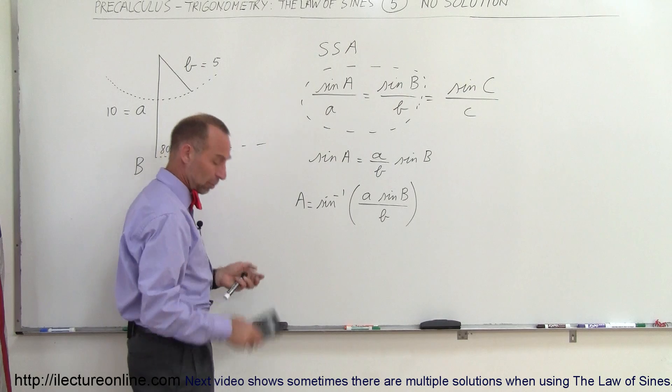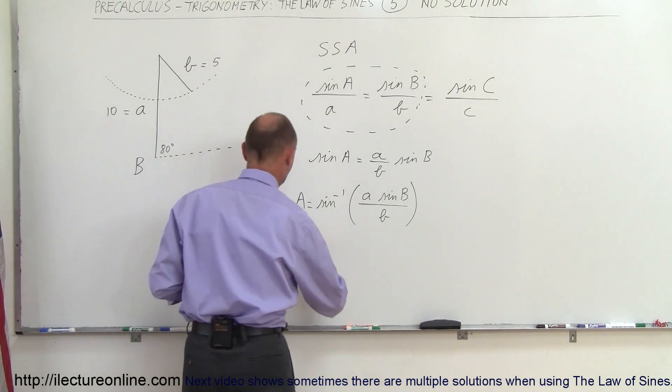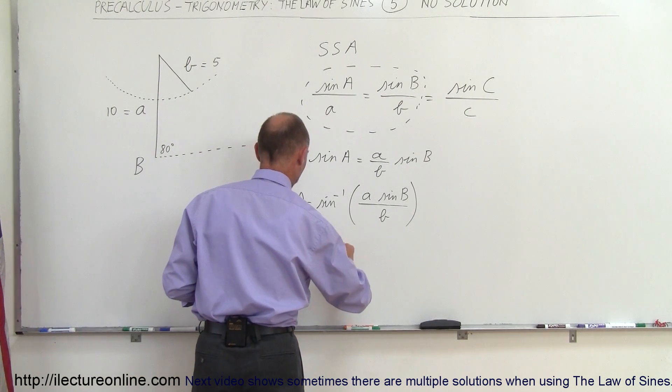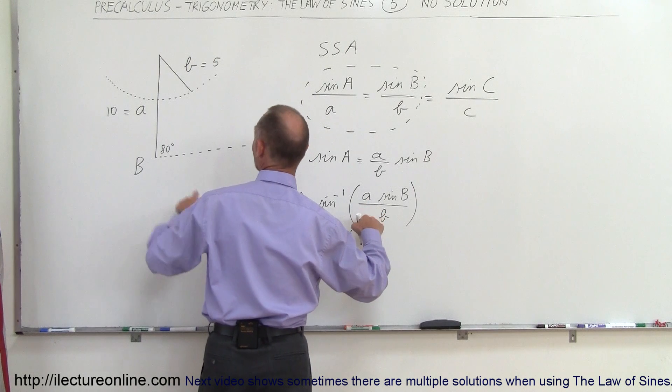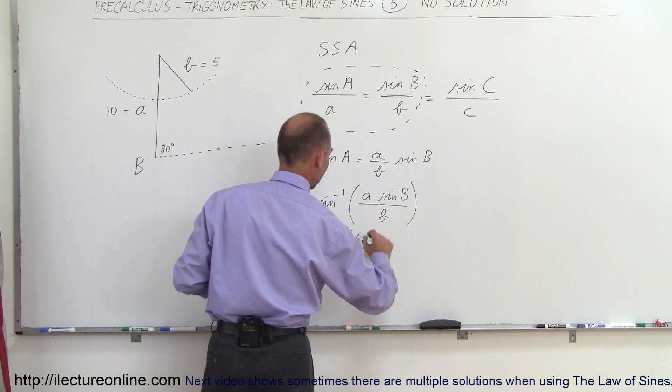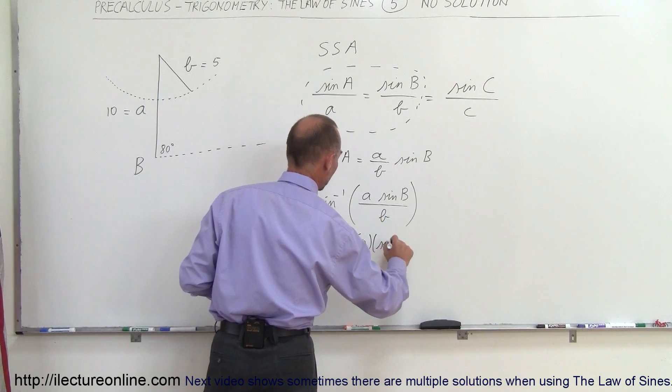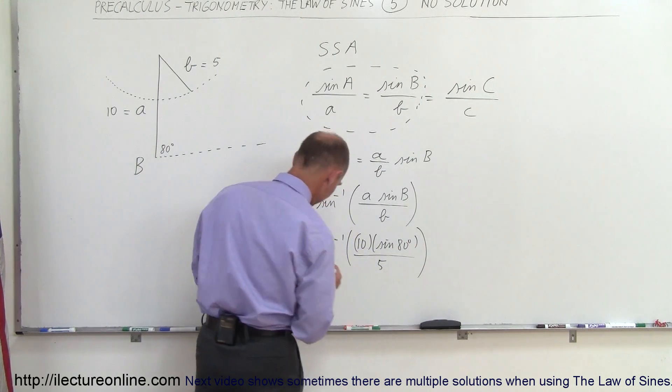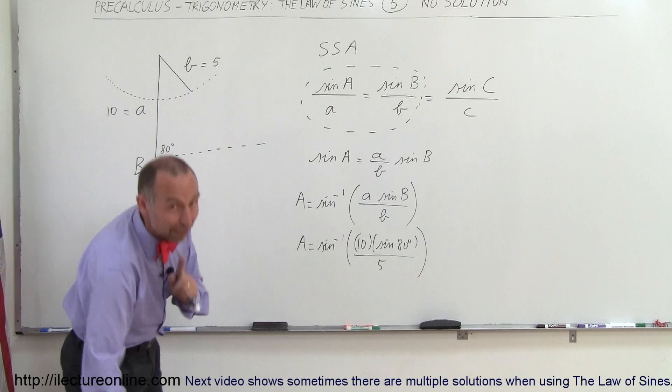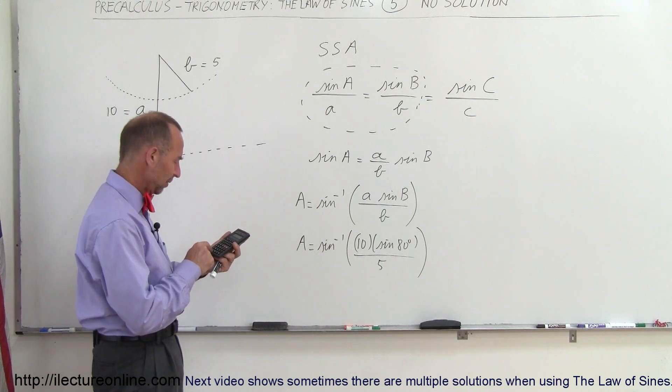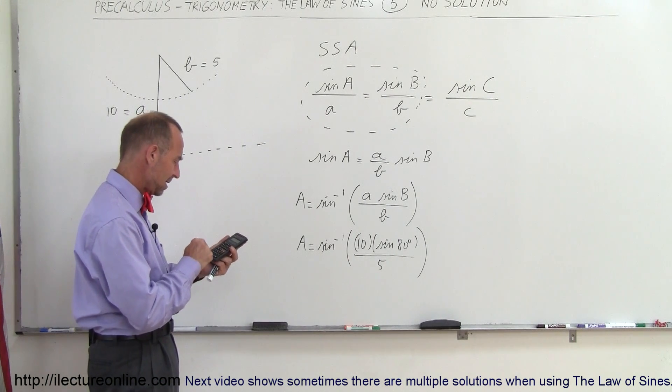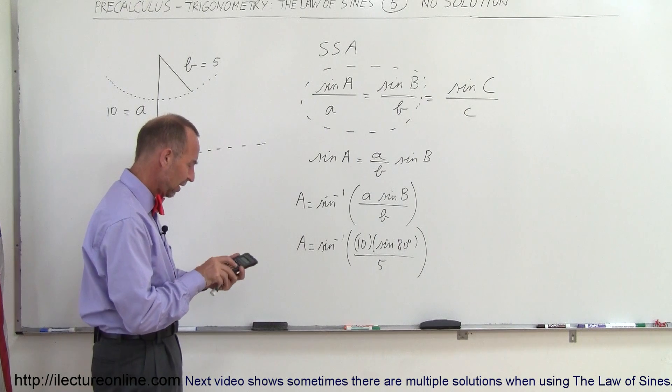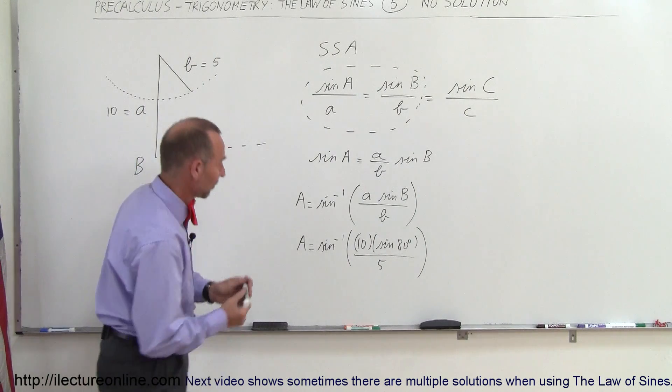So let's see what we get. Let me plug in the numbers first. So we have A is equal to the arcsine of side A, which would be 10, times sine of B, which would be 80 degrees, divided by side B, which would be 5. I think you're beginning to see that there might be a problem here. Let's see what we get. So it would be 2 times sine of 80—take the sine of that, equals 1.97.